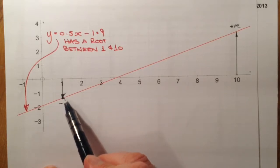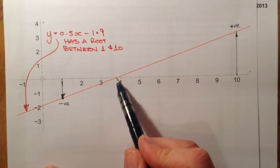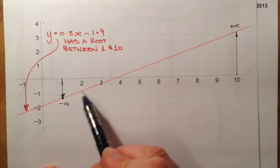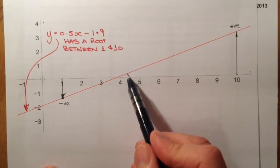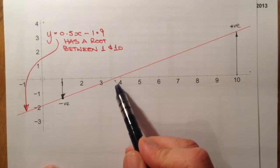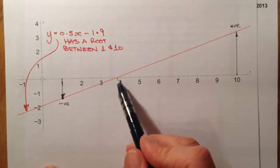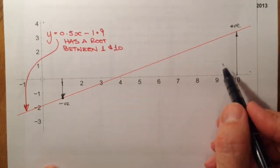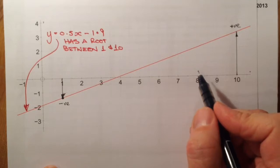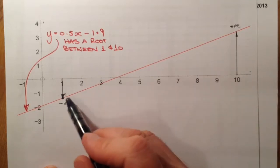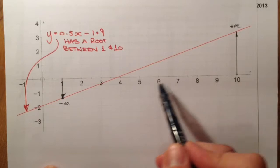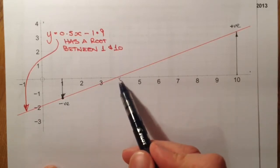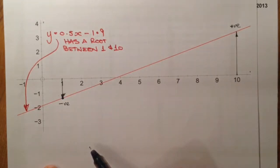That value tells me it's going to be negative on the graph. I then substitute 10 into the equation and get a positive value. So if I've got a positive and a negative calculation between two values of x, it tells me that the line will cross the x-axis at some point in between them — from negative through to positive, or positive through to negative. The root is just wherever it crosses the x-axis.